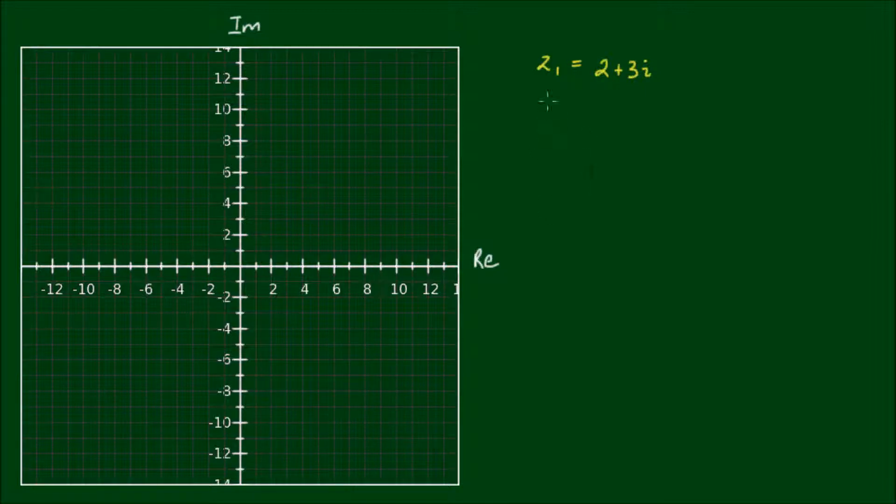So for instance the complex number 2 plus 3i, we can plot it on the complex plane and to do that we simply draw a cross or a dot corresponding to its real and imaginary components. So here we have z1 with the coordinates 2, 3.